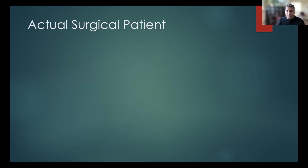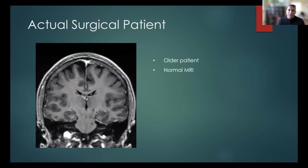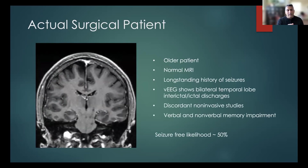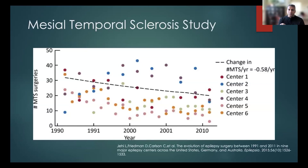What's happening across the country and across the world is that our actual surgical patients look more like the exact opposite. They may have a normal MRI, they're older, and they have a long-standing history of seizures — a risk factor for lower seizure freedom rates. When we do scalp EEG, we may see bitemporal epilepsy, which is another bad prognostic factor. They may also have discordant non-invasive studies — PET, MEG, and others all pointing to different parts of the brain. For these patients, the seizure-free likelihood is in the range of 40 to 50 percent.